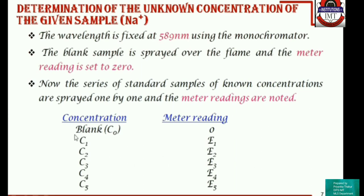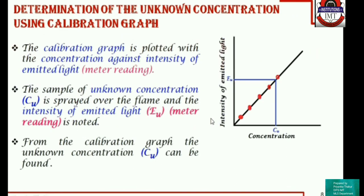We have the blank sample and all other concentrations with their meter readings. We then plot a calibration graph with intensity of emitted light (meter reading) on the y-axis and concentration on the x-axis. We get a straight line passing through the origin because the blank sample gives zero intensity. Once we spray the unknown concentration and note its meter reading, we can use the calibration graph to determine the unknown concentration.